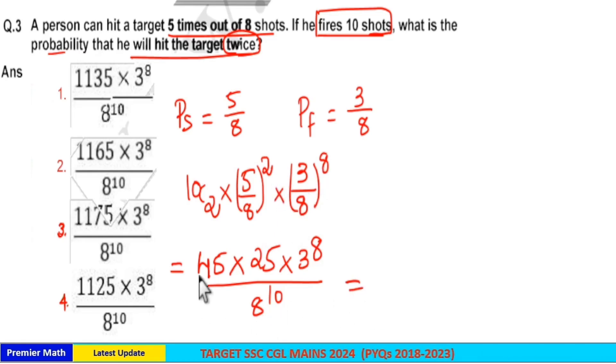So 8 raised to 10. Now 45 into 25 means 5 5s are 25, 5 into 2, 10 plus 20, 30, 30 plus 2, 32, remaining 3,